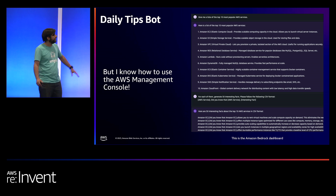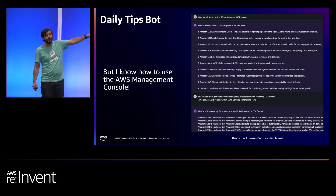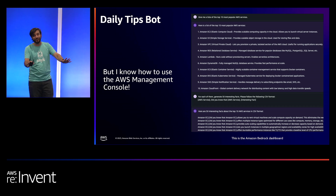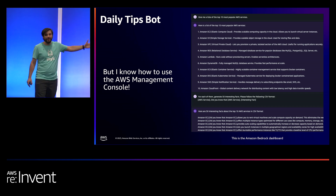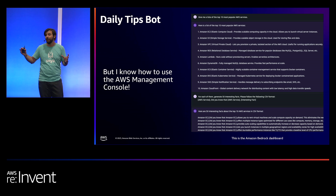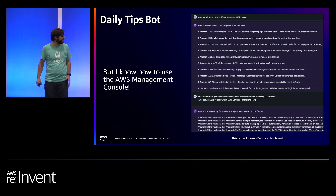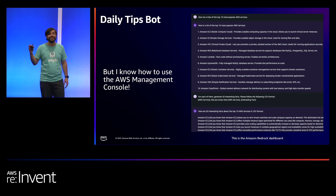My prompt was: 'give me a list of the top 10 most popular AWS services.' If you're Brazilian like me or speak Portuguese, you'll realize I misspelled 'list' with the Portuguese version — and even then, Amazon Bedrock understood. So the thing is good! It gave me a list of services. My follow-up prompt was: for each of those, generate 50 interesting facts following this specific CSV format. By the end of it, I had 500 different interesting facts in a CSV format.